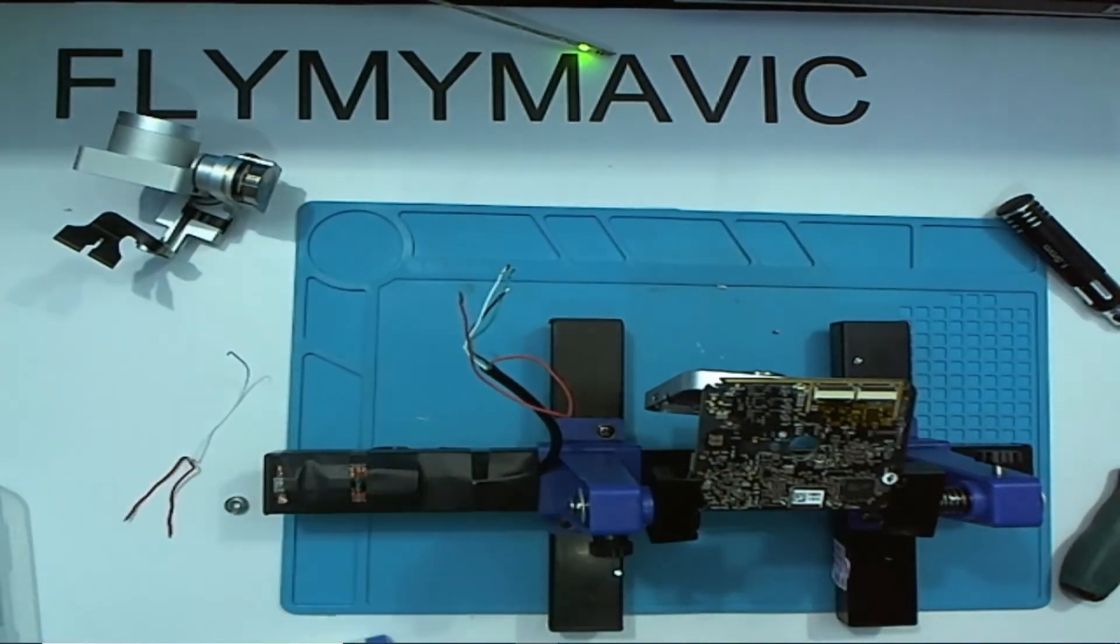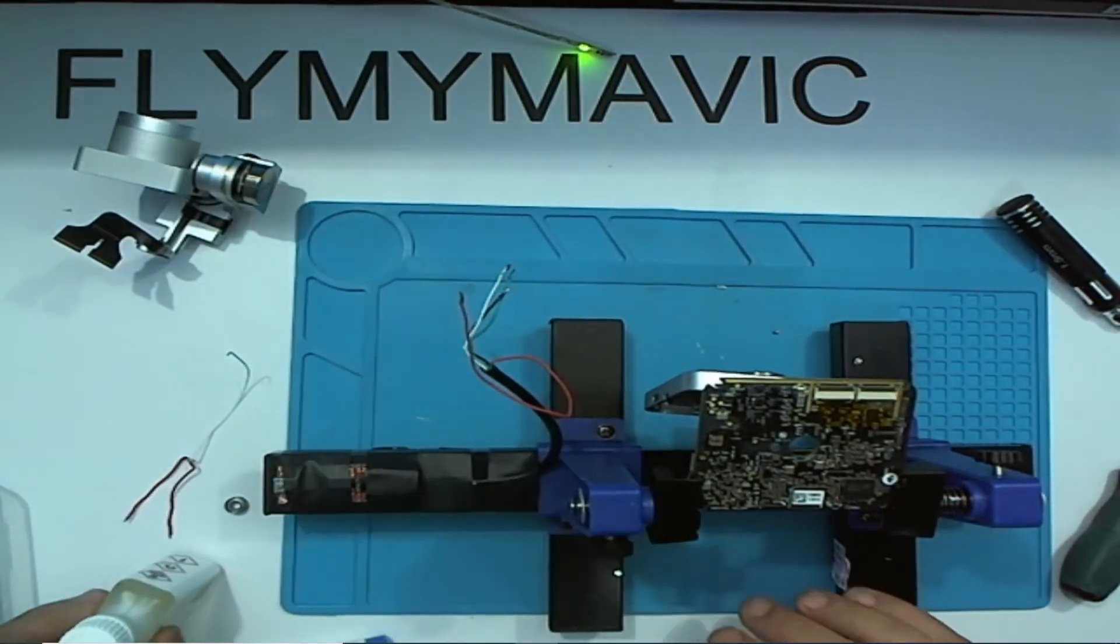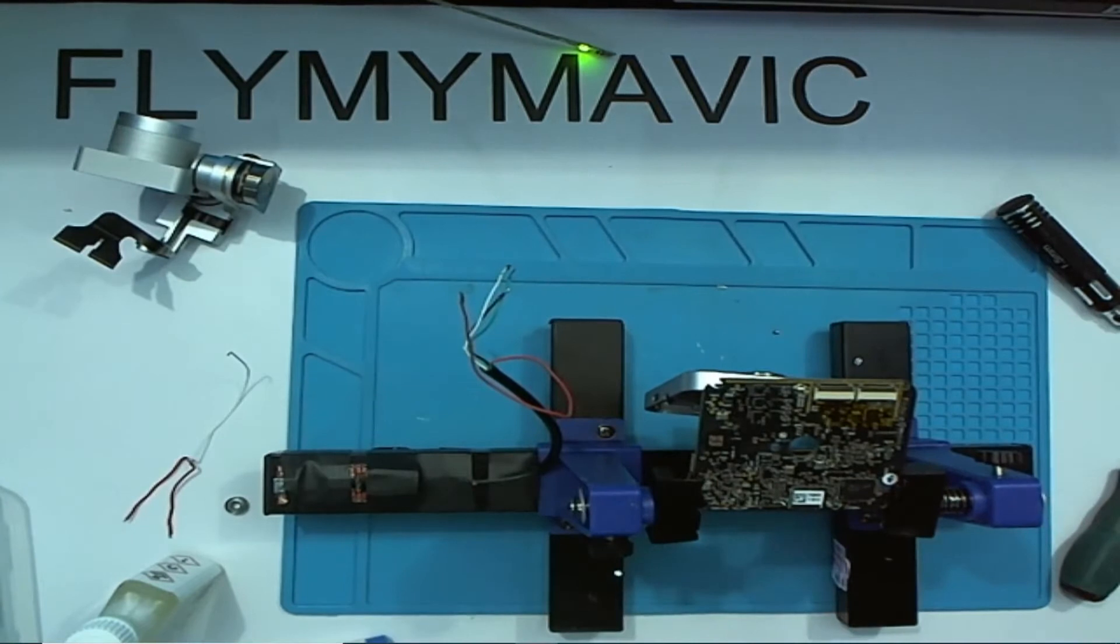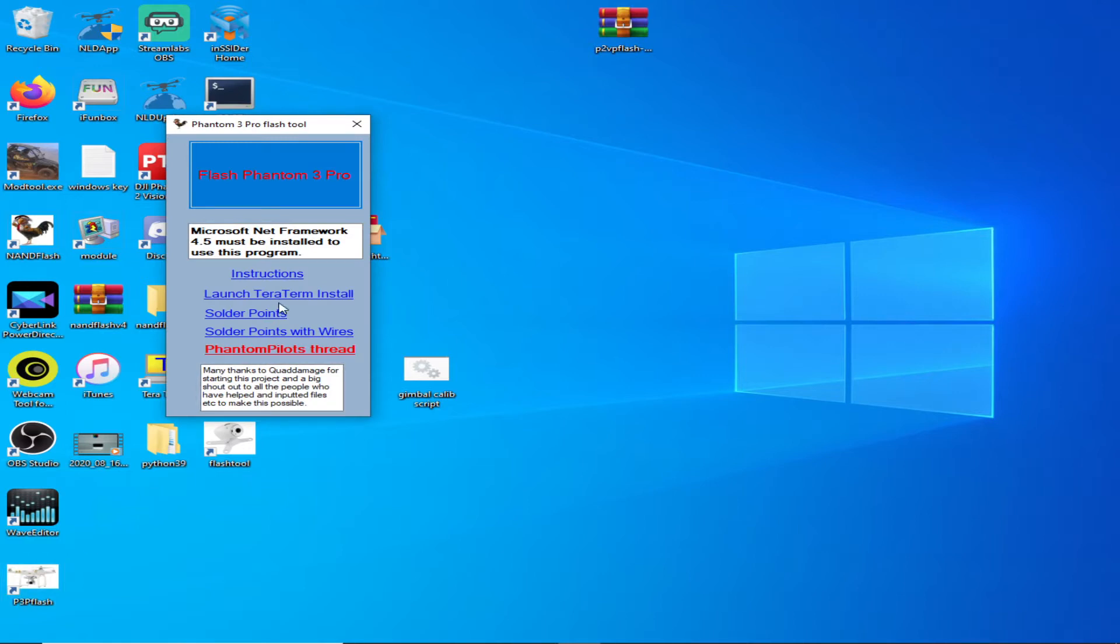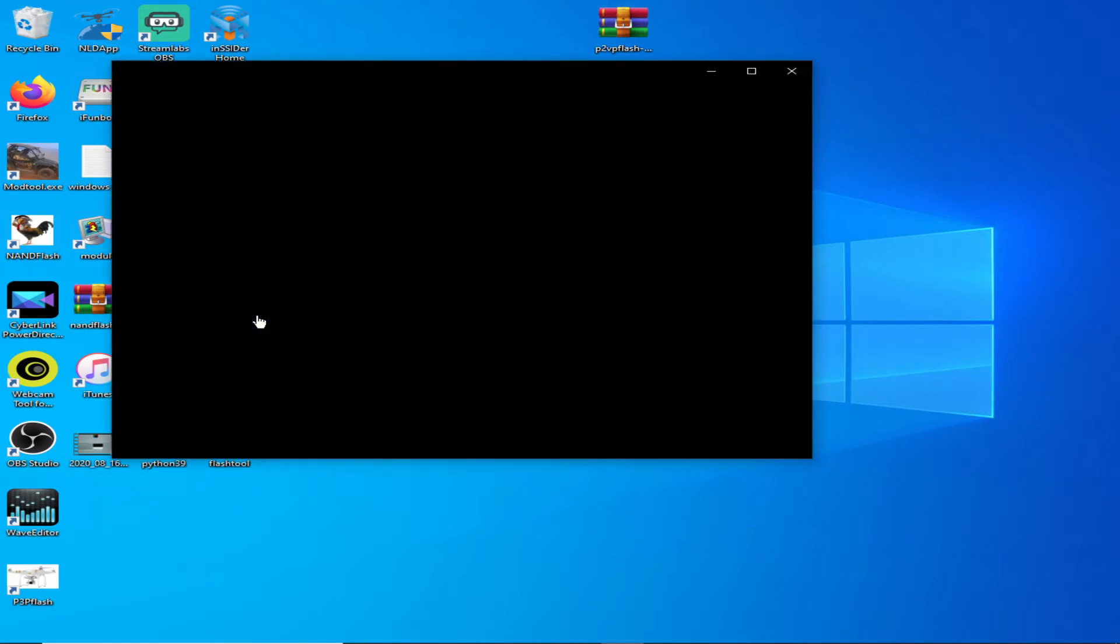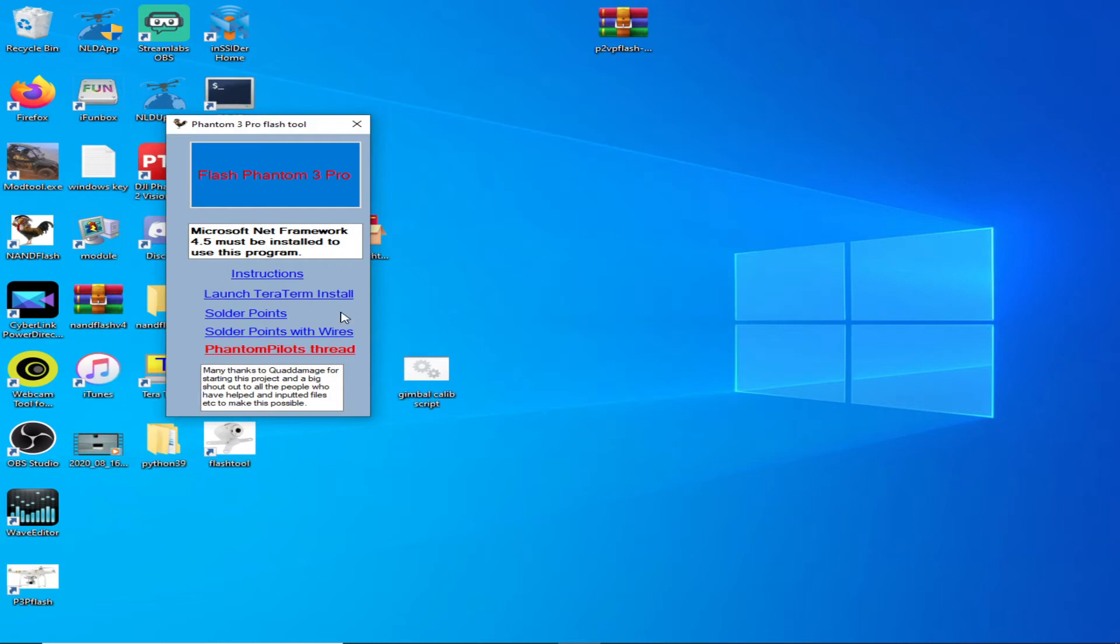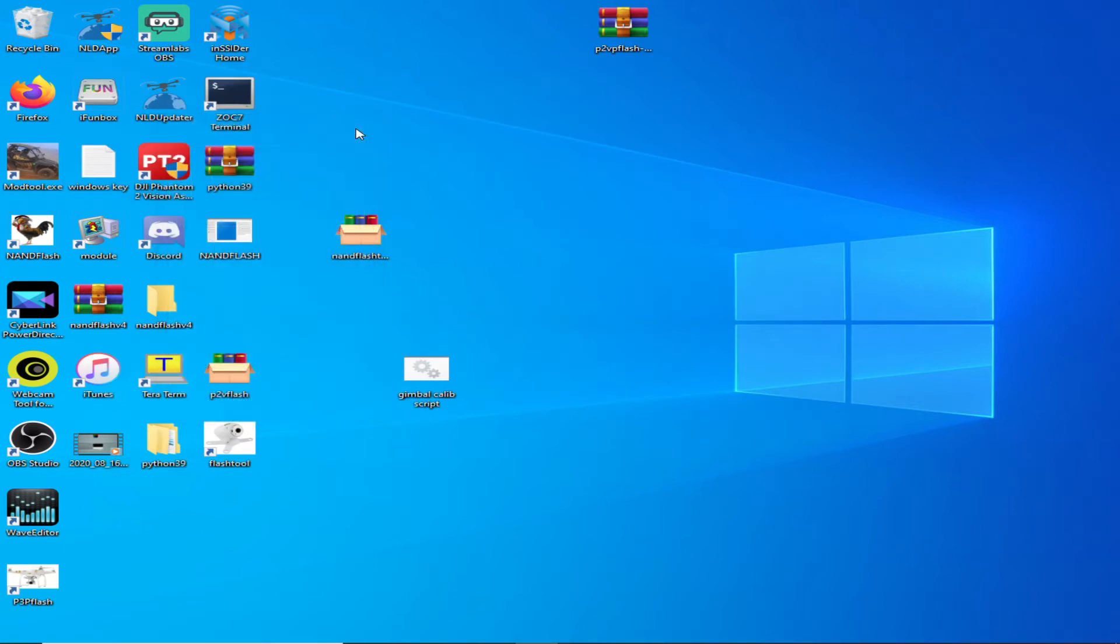There we go, both sorted out. I'm getting my inputs again and we're just going to put some of the other ones. Let me just show you the tool a second. If I just run the tool you will see it has solder points and solder points with wires. This will open up a picture of where everything connects to. Don't worry about what I'm doing at the moment, I will go through it all in a little while.